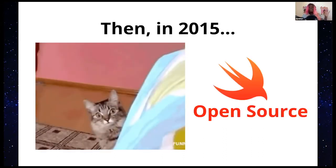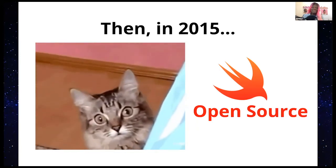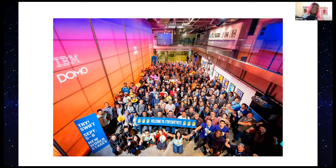Moving on into evolution — in 2015, Swift became open-sourced, and this was a really big deal. All of a sudden there was a community of developers who rallied around the language. For the first time, Apple was giving the developer community a voice and power to build community around it, saying: we are letting you in, this is our new language, and we're giving you input to make it the language that you want.